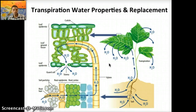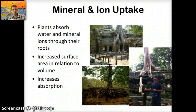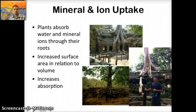It's really quite remarkable that plants are able to defy gravity, and it allows them to photosynthesize. Not only do plants take water from the soil, they also take minerals and ions. Plants absorb water and mineral ions through their root tissue. There's increased surface area in relation to their volume to help them absorb more, which obviously increases the absorption rate.